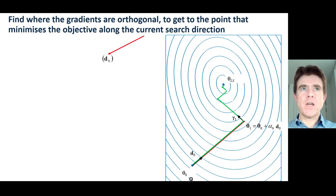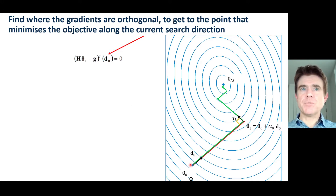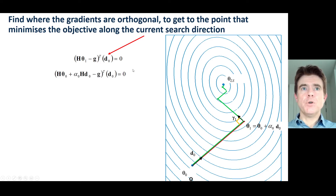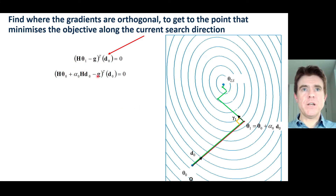To find alpha, we need to find where the gradients are orthogonal. Calling the initial search direction d0 (which equals gamma 0 for steepest descent), we require a step size alpha such that at theta 1 the gradient gamma 1 — the difference of the predicted back-projected image for the new estimate theta 1 compared to the measured one — is orthogonal to the original search direction d0. Orthogonality is defined by the scalar product being zero. Substituting theta 1 = theta 0 + alpha times d0 into that condition gives the expression for alpha.